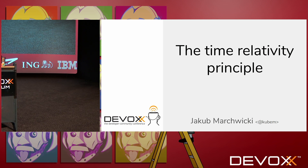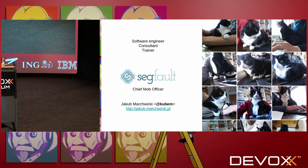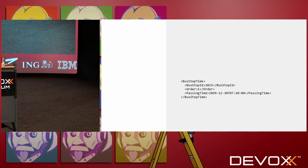I will talk about time representation in computer systems — how we represent time and what can possibly go wrong with time. And I will not do that because I'm qualified with millions of cat pictures on my Instagram account, but because I had been on this project that started with this tiny bit of XML.